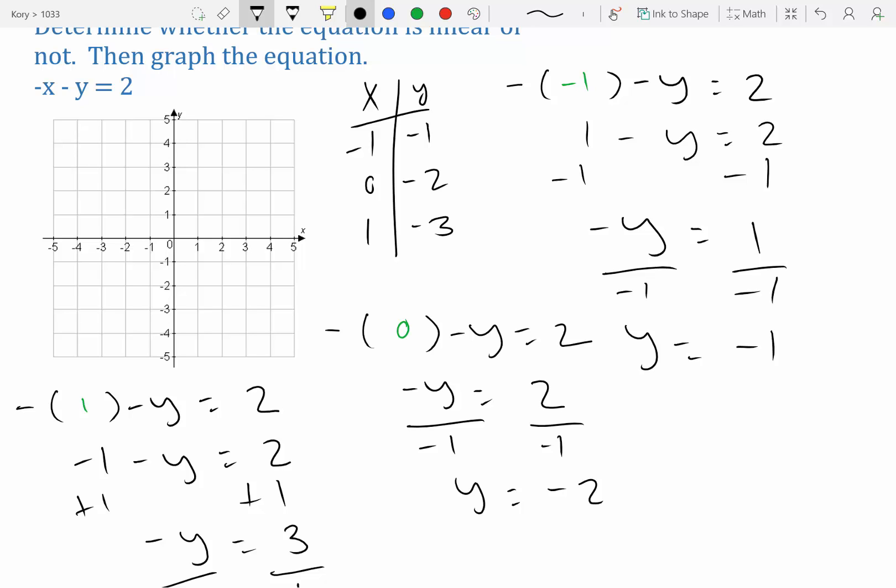So we have negative 1, negative 1. 0, negative 2. And 1, negative 3. We're going to connect the dots. So is this linear? Yes, it's linear.